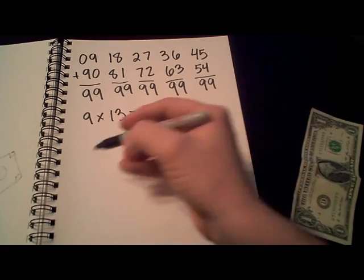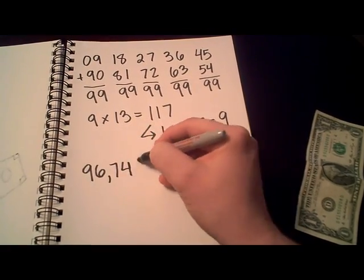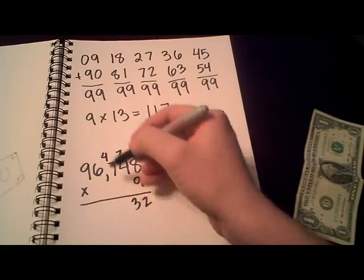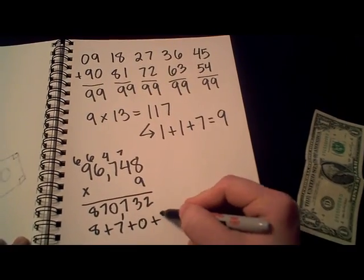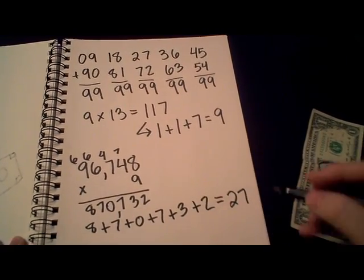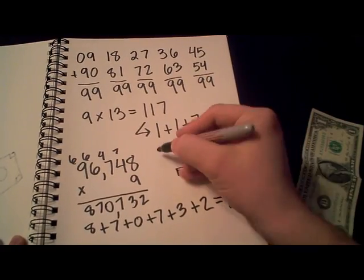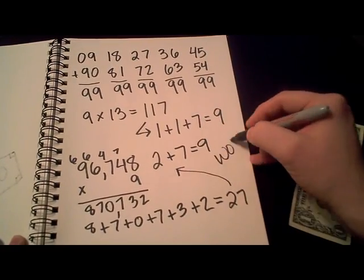Let's go crazy and find a multiple that's really big. 96,748 times 9. We end up with 870,732. And if we add up those digits, we end up with 27. This seems to violate our previous pattern until you realize that if we add up these two digits, we again return to 9.